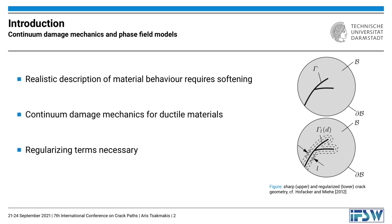One possibility to overcome this problem is to introduce regularizing terms in the material model. This can either be done by regularizing the damage variable itself, so that the gradient damage model is introduced, or this can be achieved in terms of the phase field approach where the crack topology is regularized, as can be seen on the right side. In the upper picture a sharp crack topology as known from classical fracture mechanics is shown, and in the lower picture the same crack topology is smeared over an area depending on an internal length scale denoted by L.